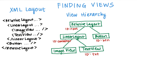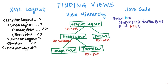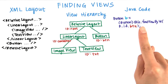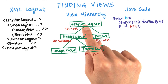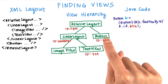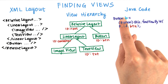For example, this image view doesn't have an ID associated with it, and that's okay. Within the Java code of the associated activity or fragment, if we need a reference to the button, we can simply call findViewById, which will traverse down the view hierarchy until it finds a view with the ID button, and then return that.